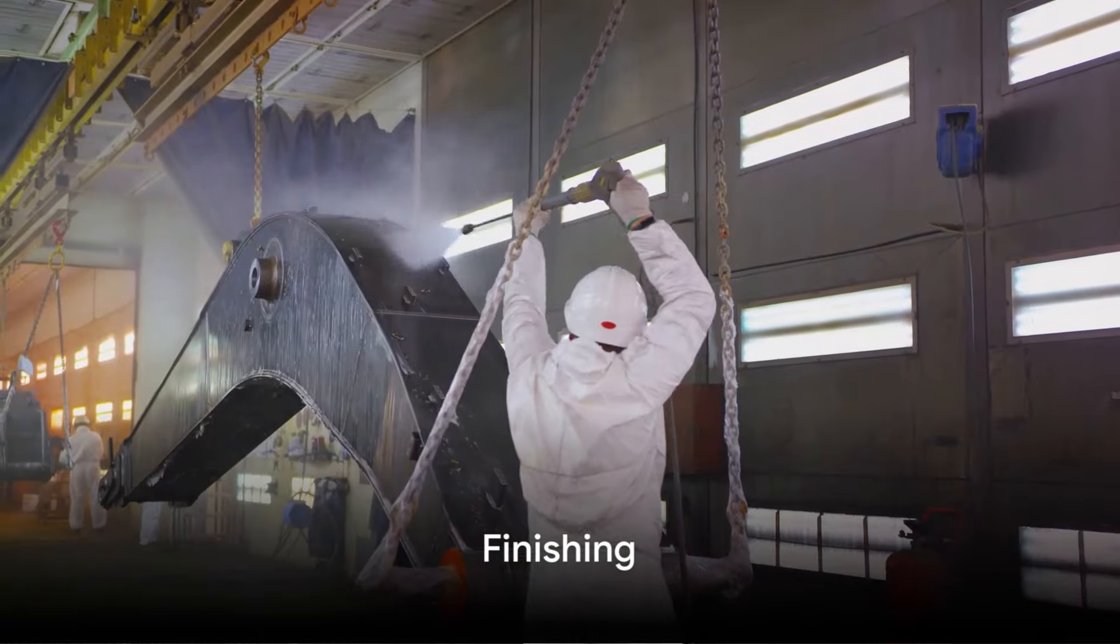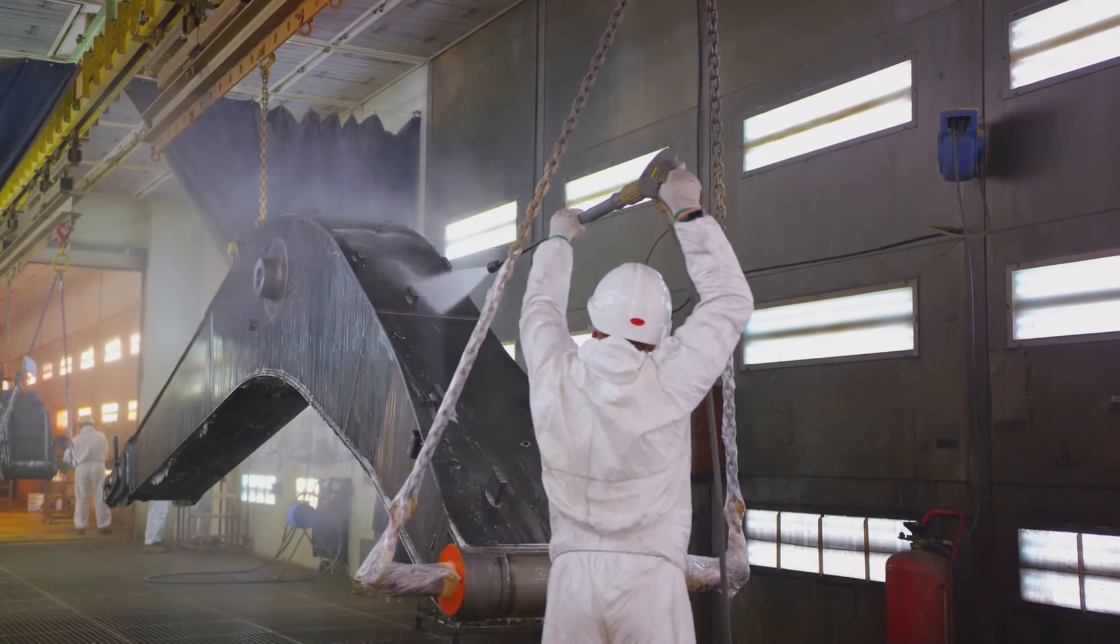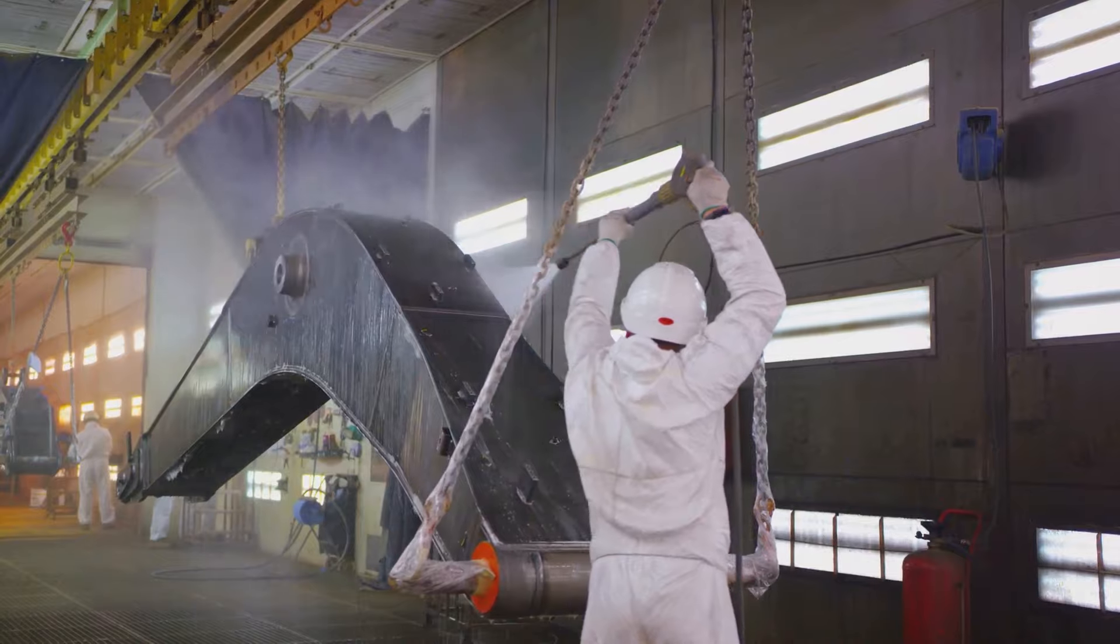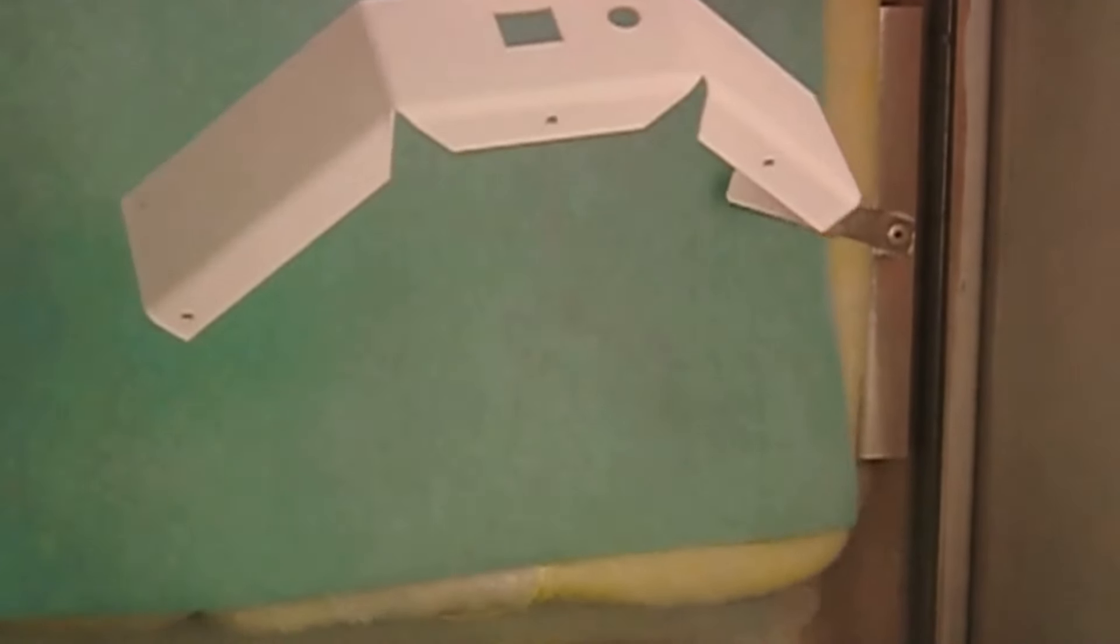The finishing methods are the final touches that elevate the piece from a mere metal structure to a work of art. Powder coating gives the piece a smooth, durable finish, protecting it from corrosion and wear.